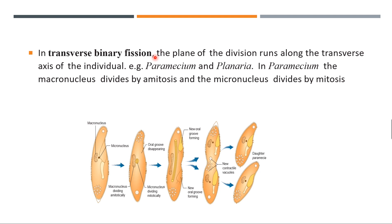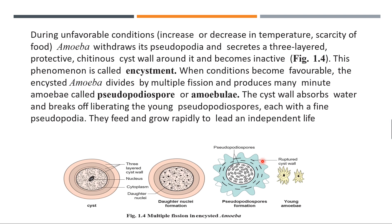Transverse binary fission occurs in Paramecium and Planaria. Here the plane of division runs along the transverse axis of the individual. Paramecium consists of two nuclei — a macronucleus and a micronucleus. The macronucleus divides by amitosis and the micronucleus divides by mitosis. The macronucleus elongates and is cut in the middle, new contractile vacuoles form, the oral groove separates, constriction occurs in the middle, and this results in two daughter paramecia.